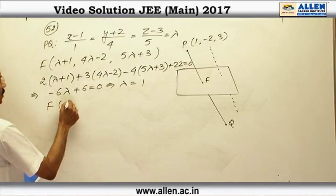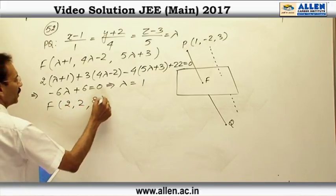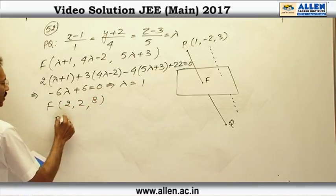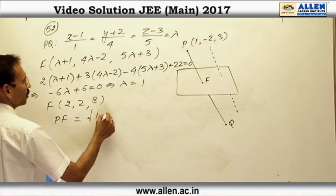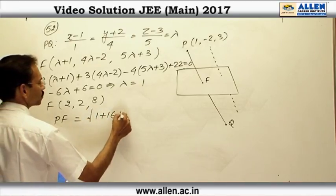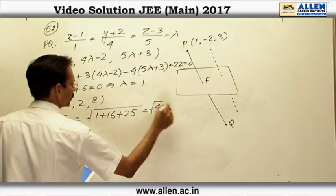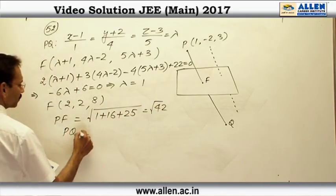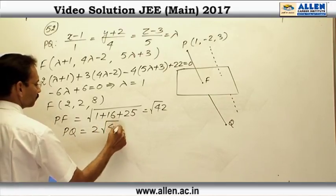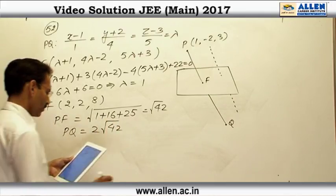Therefore F is 2 comma 2 comma 8 and the distance PF will be square root of 1 plus 16 plus 25, square root of 42. That is why PQ is twice root of 42 and the correct option will be 3.